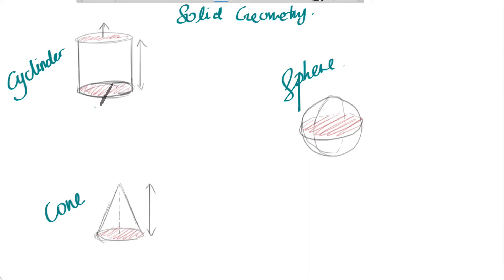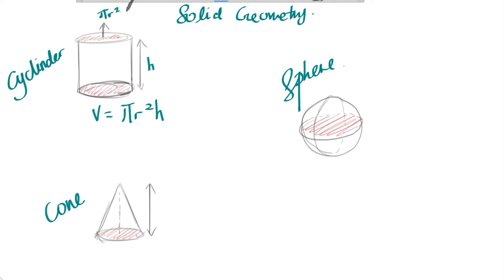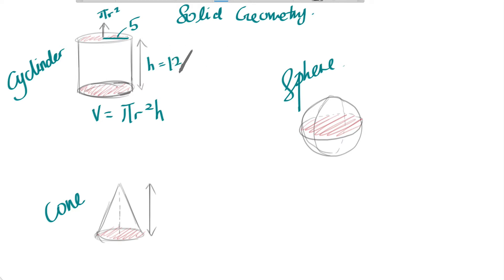For the cylinder, the formula for volume is pi r squared h, where h is the height of the cylinder. Pi r squared is the area of the circle, and r is the radius. If given the radius is 5 and the height is 12, the volume would be pi times...